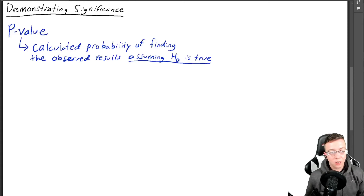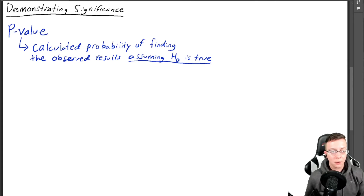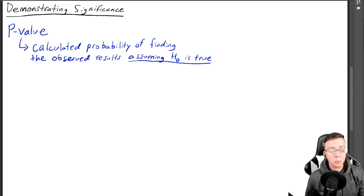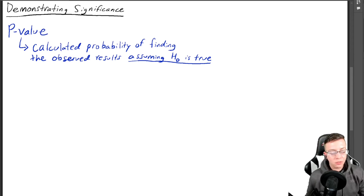So what is a p-value? A p-value is the calculated probability of finding the observed results assuming that H-naught is true. H-naught is the null hypothesis, which is our default or assumed position that there is no difference between the control group and the experimental group. What this means is that if I assume there is no difference, what is the likelihood that the test statistic falls within a range that would be expected if there is no difference?